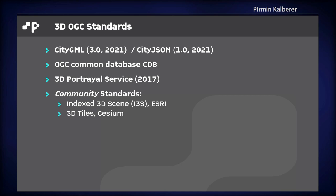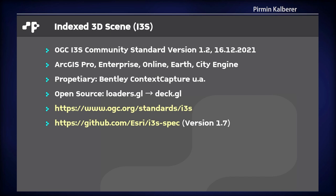There are some OGC standards around 3D. I've made a collection here. Prominent are CityGML, which is in version 3, but there is also CityJSON, which is a similar model in JSON. There is a Common Database, CDB, which is about 3D objects. There is an old standard, the 3D Portrayal Service. And there are two community standards — these are made by companies outside of OGC, and OGC adapts them as standards. The first one is the Indexed 3D Scene, i3s standard, which is from Esri.